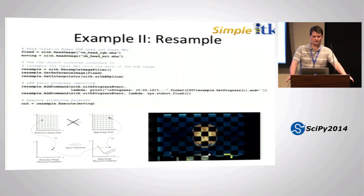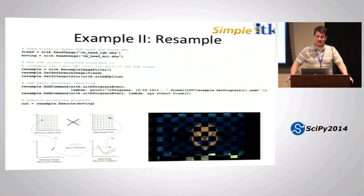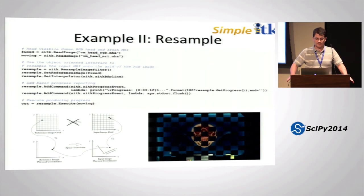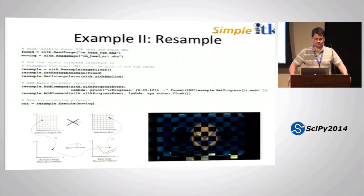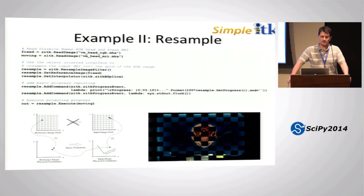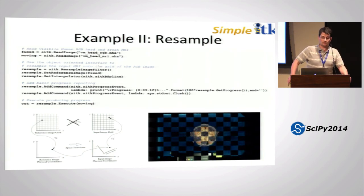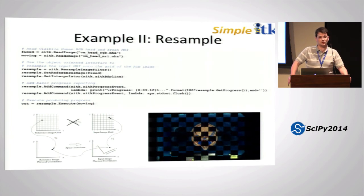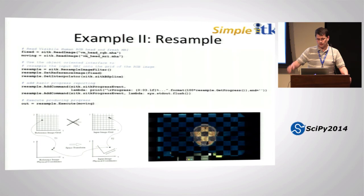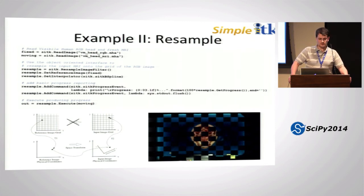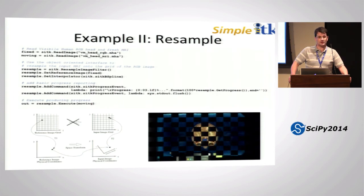This example illustrates the importance of physical space and orientation. We have two images — the visible human head and an MRI head — acquired with different fast axes in different directions. Resampling the two on top of each other with the identity transform, and because we have the metadata, the images are essentially oriented in the same direction, though not aligned correctly. We don't directly map from one image grid to another, but instead go through physical coordinate space, apply the transform, and then invert the physical space transformation back.